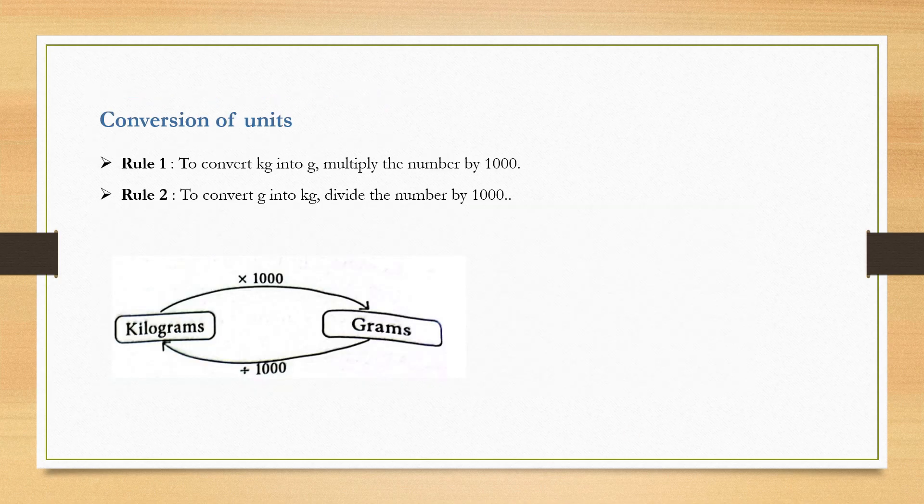Conversion of units: To convert kilogram into gram, multiply the number by 1000. And to convert gram into kilogram, divide the number by 1000.